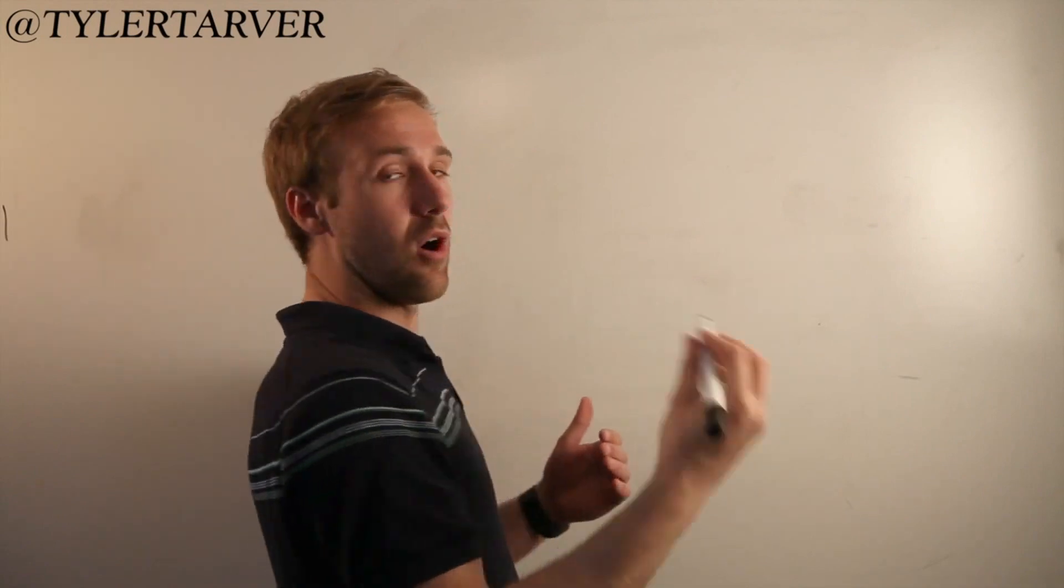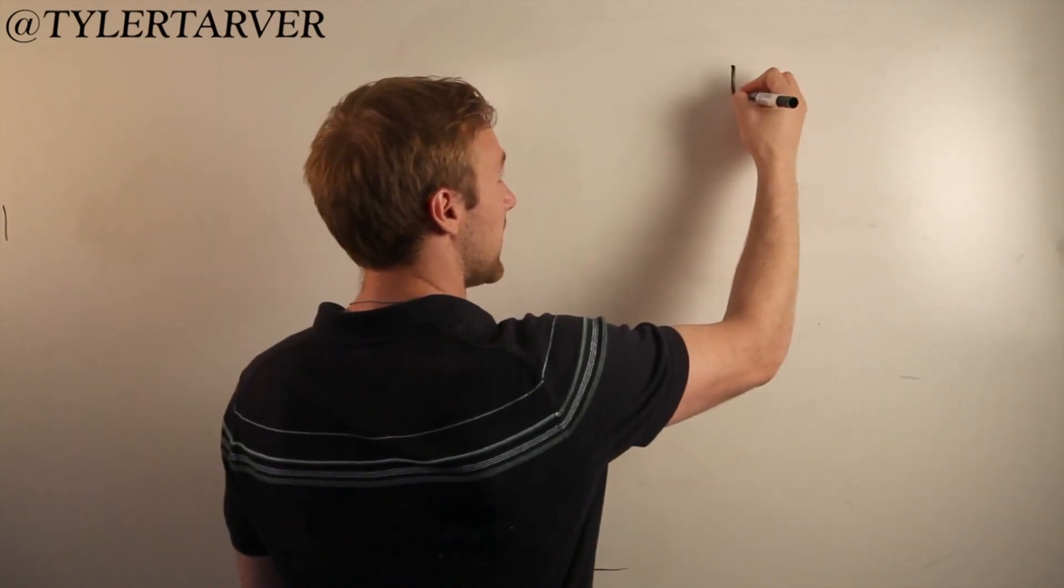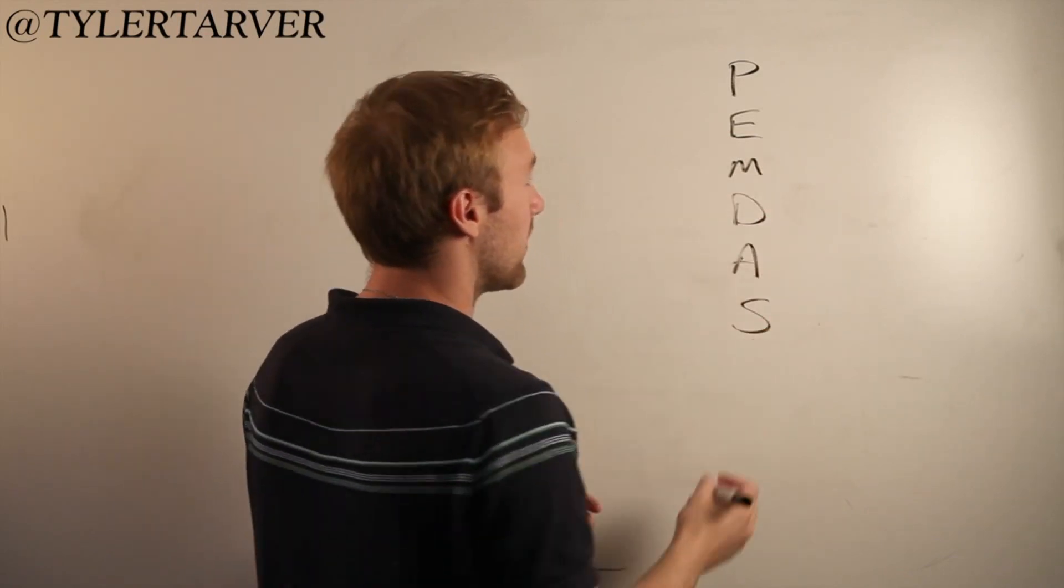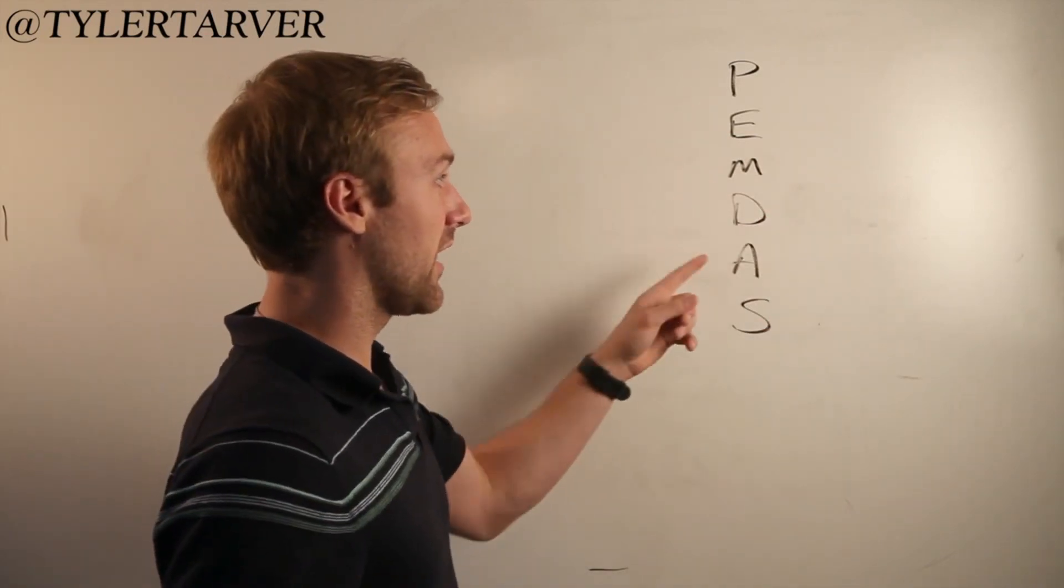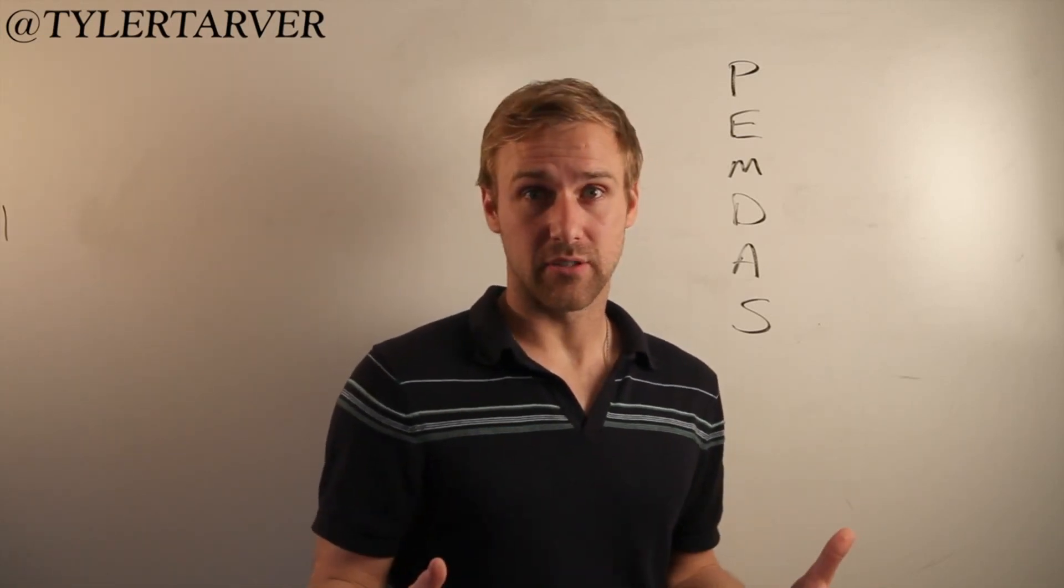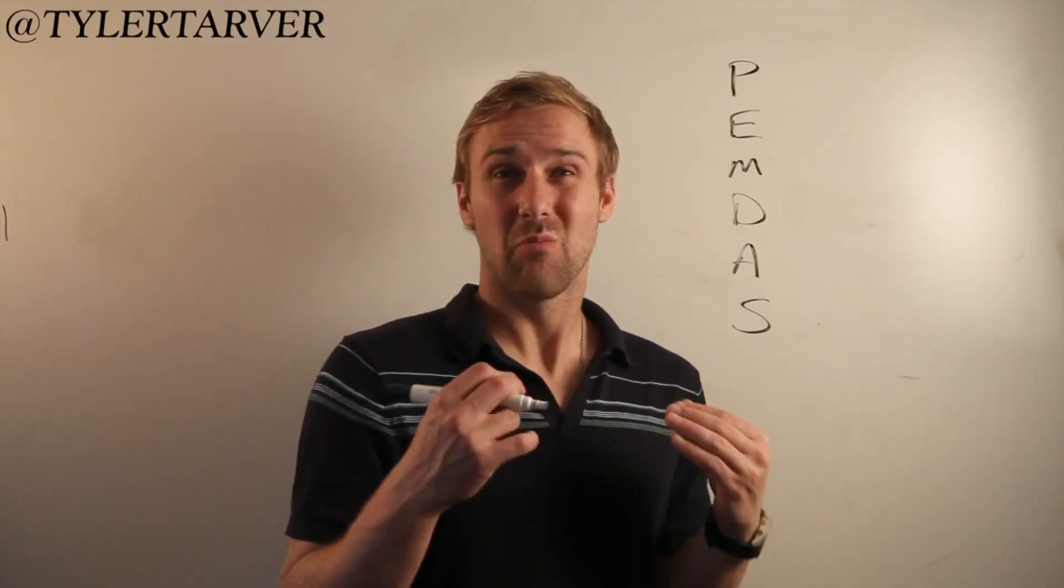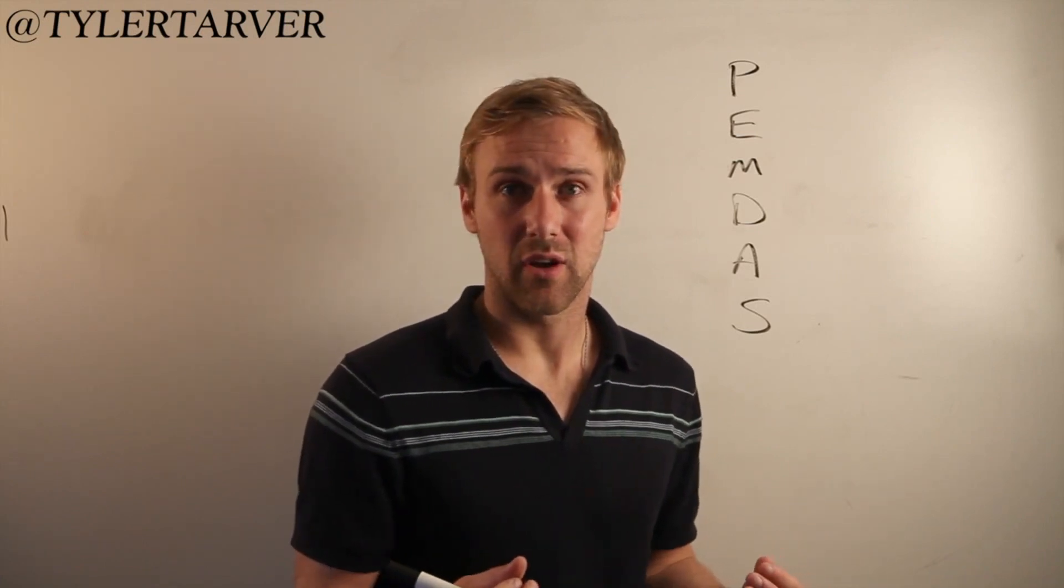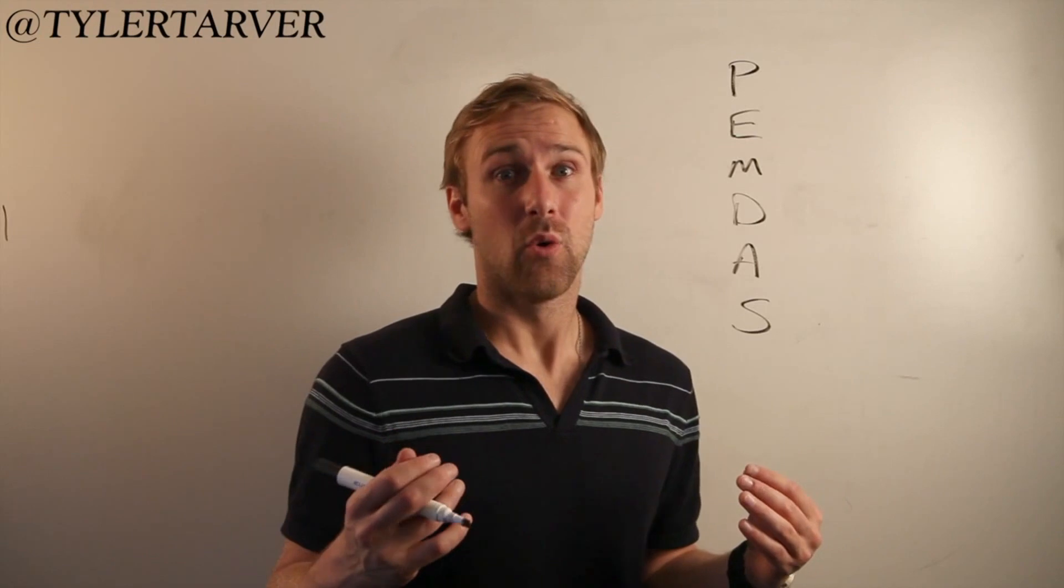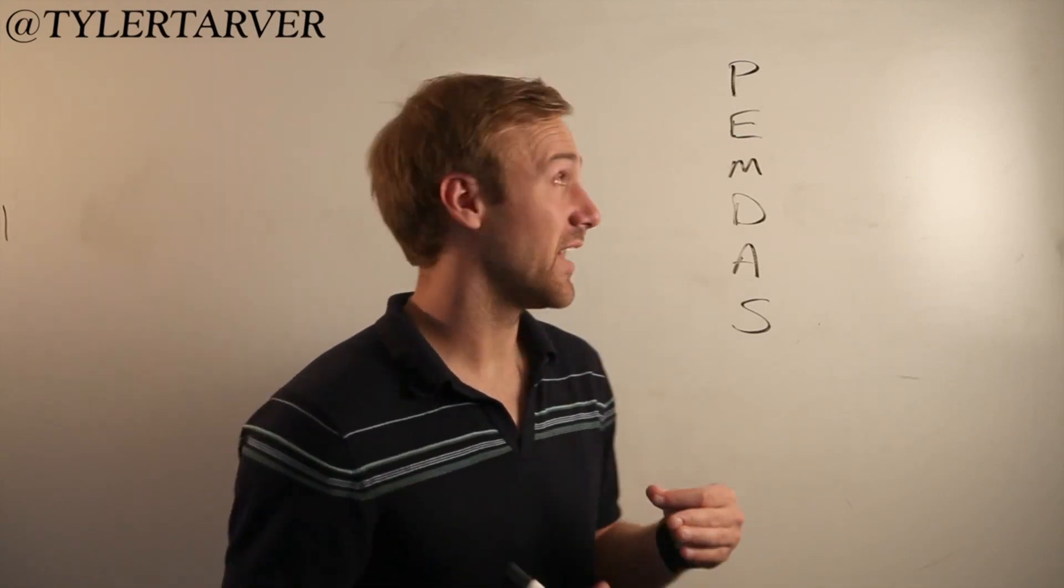This is the thing you'll always hear people say. Please excuse my dear Aunt Sally. Please excuse my dear Aunt Sally. This is the order in which you need to work an equation. Certain things are more important than other things. It's not like life where everybody gets a participation ribbon. This is like math where things are more important than other things.